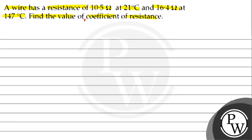So what is the key concept? The concept is R2 equals R1 bracket 1 plus alpha delta T. Here, R2 is the final resistance, R1 is the initial resistance, alpha is the temperature coefficient, and delta T is the change in temperature.